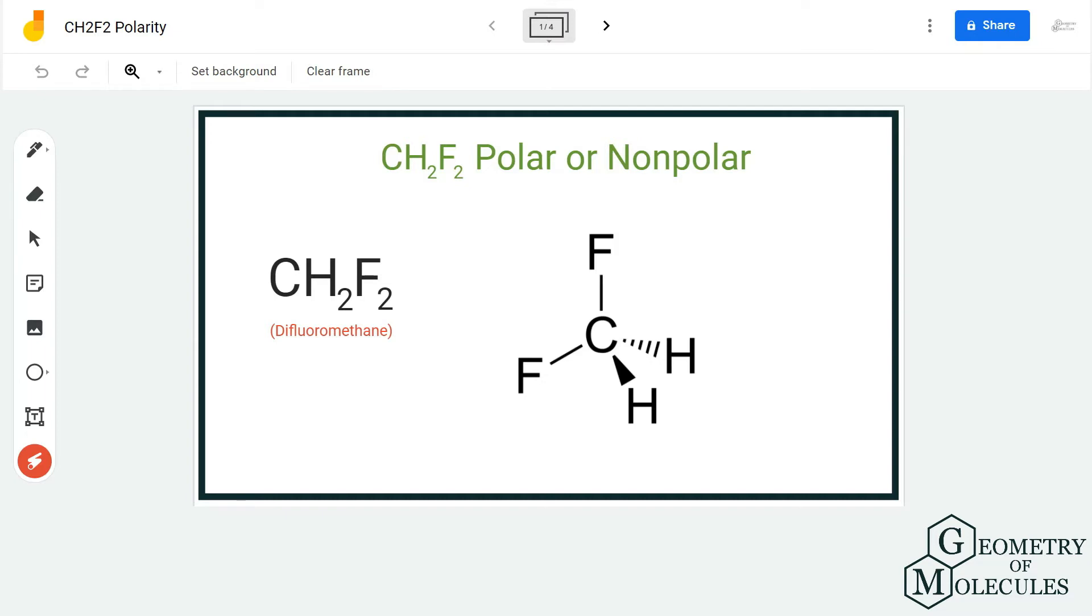If you look at its Lewis structure, you can see that a carbon atom is forming bonds with two hydrogen atoms and two fluorine atoms. Now if you look at its geometry, it is like this: two fluorine atoms are on one side and two hydrogen atoms are on the other side.